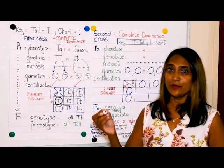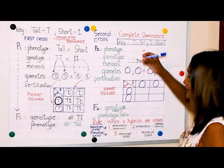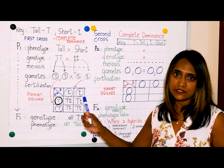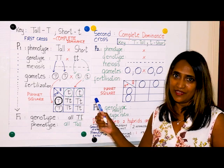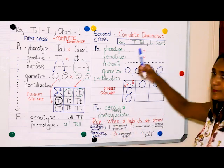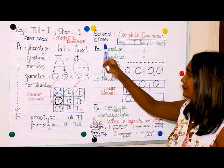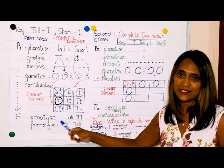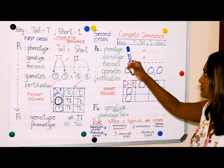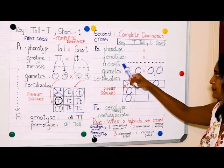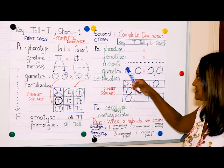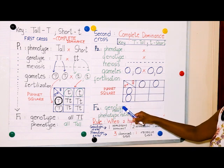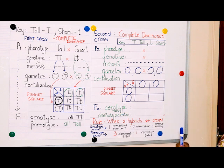Now I'm going to use another monohybrid cross to show you why Mendel got the results of three tall to one short in the F2. Remember the format, but in this case it's P2 because the F1 offspring were interbred. So it's P2, phenotype, genotype, meiosis, gametes, fertilization, F2, genotype — and in this case genotypic ratio and phenotypic ratio.